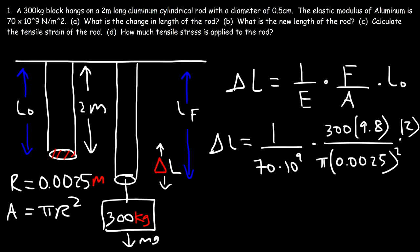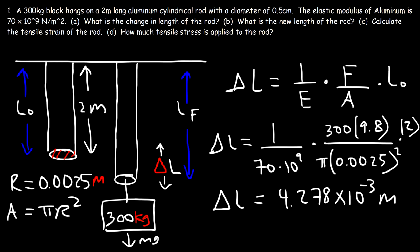Let's multiply 300 by 9.8 and by 2, then divide that result by 70 times 10 to the 9, then divide by pi, and then divide by 0.0025 squared. The value is 4.278 times 10 to the minus 3 meters. If you want that answer in centimeters, just multiply by 100, so the change in length is about 0.4278 centimeters.